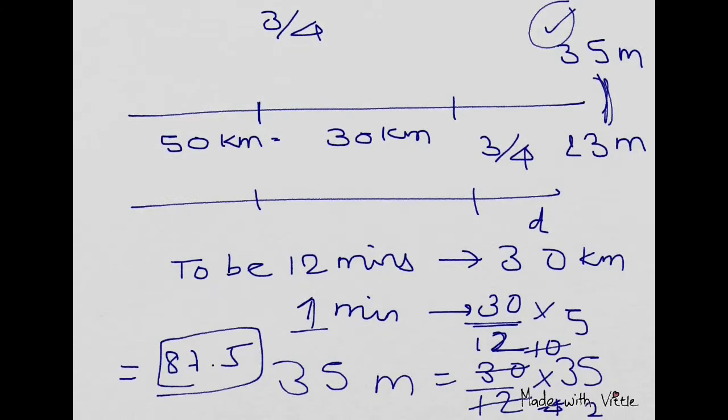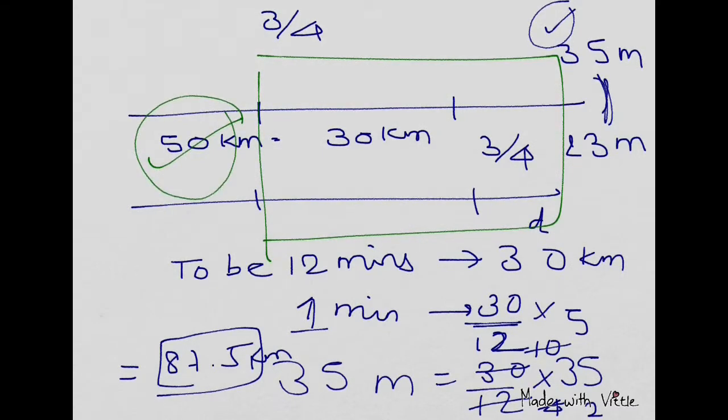And to be late by 35 minutes, because that was the initial thing, it will be 30 by 12 into 35, which you get is 87.5 kilometers. This was the calculation for this part. You forgot the 50 kilometers which was not necessary. Sometimes they don't give you this 50 kilometers, but here we are missing out - 50 plus 87.5, so you will get 137.5.